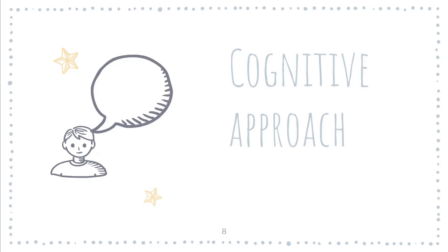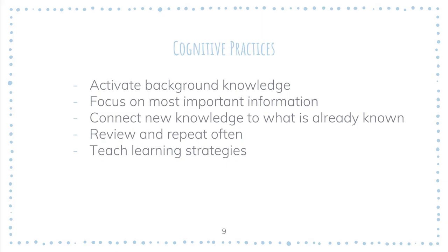The cognitive approach emerged as a response to behaviorism and considers how students think. The cognitive model is based on the analogy between the mind and a computer, and is sometimes called the information processing model. Cognitivism is about thinking and processes of the mind, distinguished from behaviorism, which is not concerned with thinking but with outward behavior. With the cognitive approach, knowledge students bring to learning is crucial — new information is connected with their background knowledge, and this is how learning is built. Cognitive practices include activating students' background knowledge, focusing on what is most important in the content, connecting new knowledge to what students already know, reviewing and repeating, and teaching learning strategies.